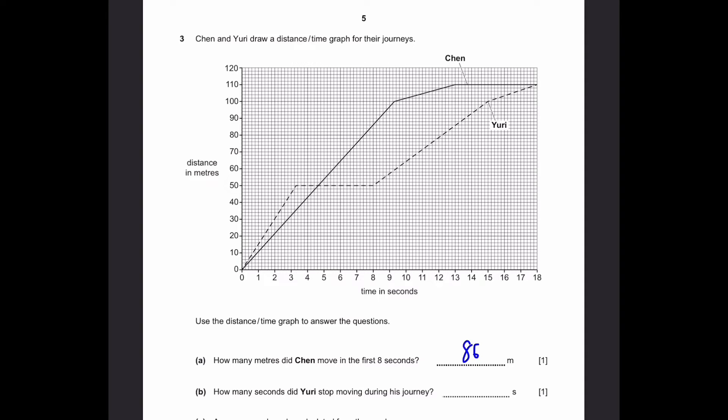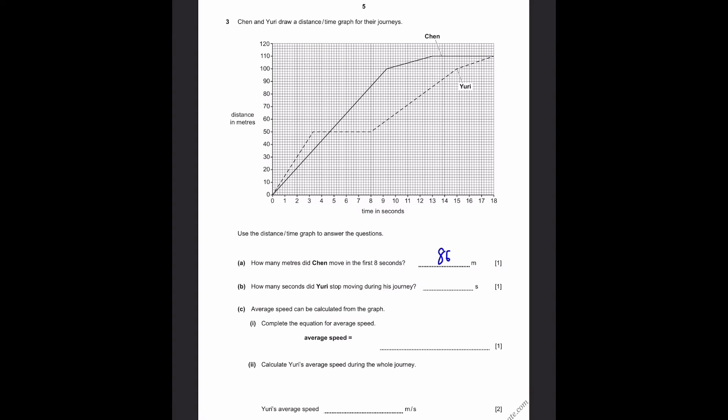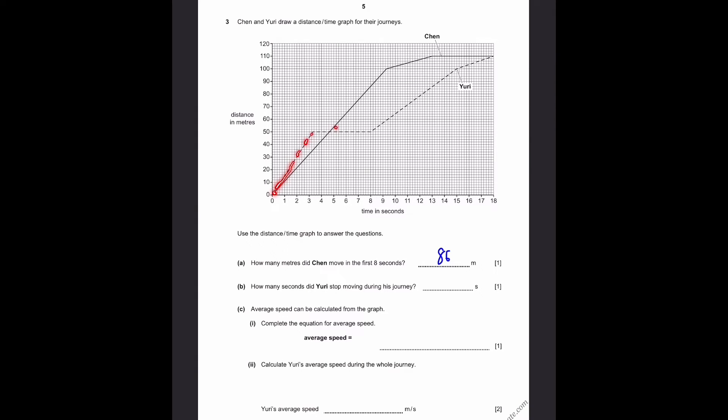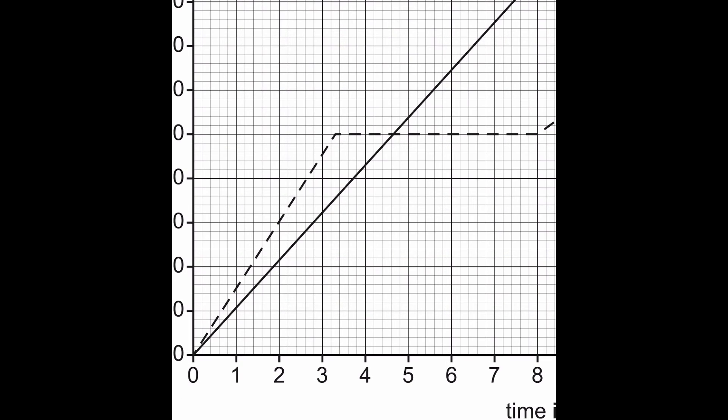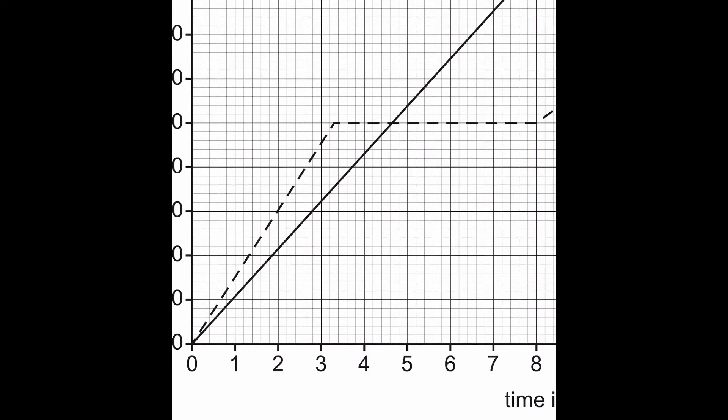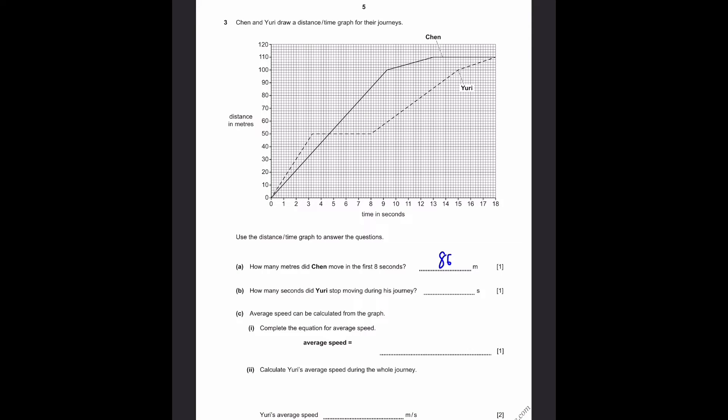Part B. How many seconds did Yuri stop moving during his journey? So in Yuri's journey, that's the dotted line, you can see that the horizontal line is where he stopped. And if you look very closely into the graph, you can see that Yuri starts stopping at 3.3 seconds. That's when he stops moving. And then he finishes it at eight seconds, that means he continues moving. So number of seconds which Yuri stopped moving is 8 minus 3.3, which is 4.7 seconds. That's the answer.